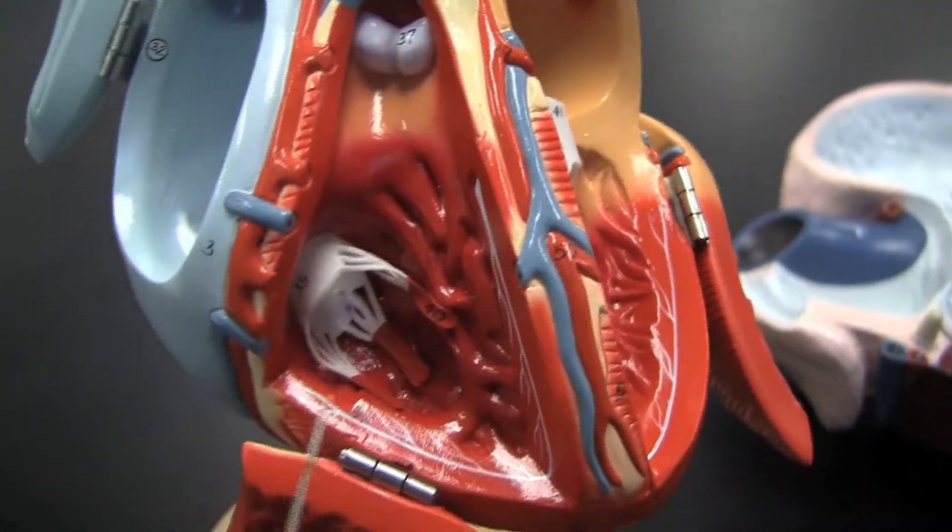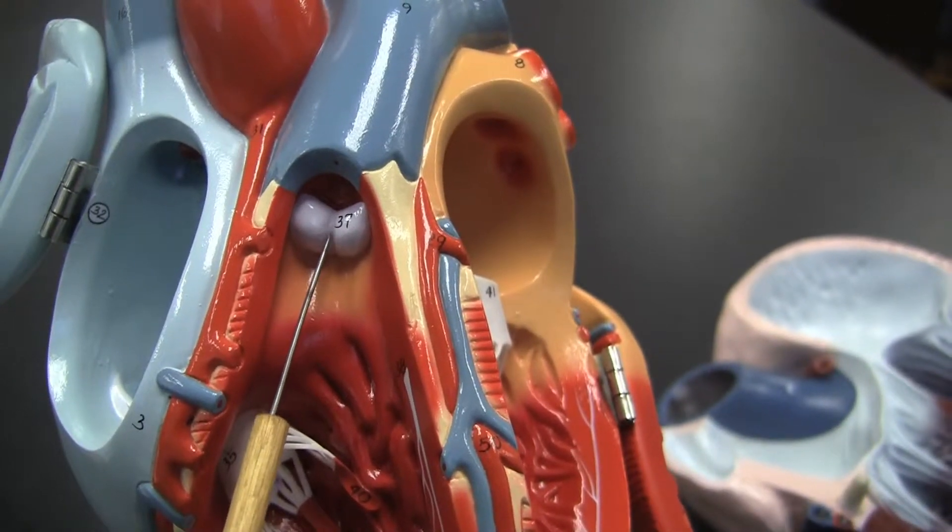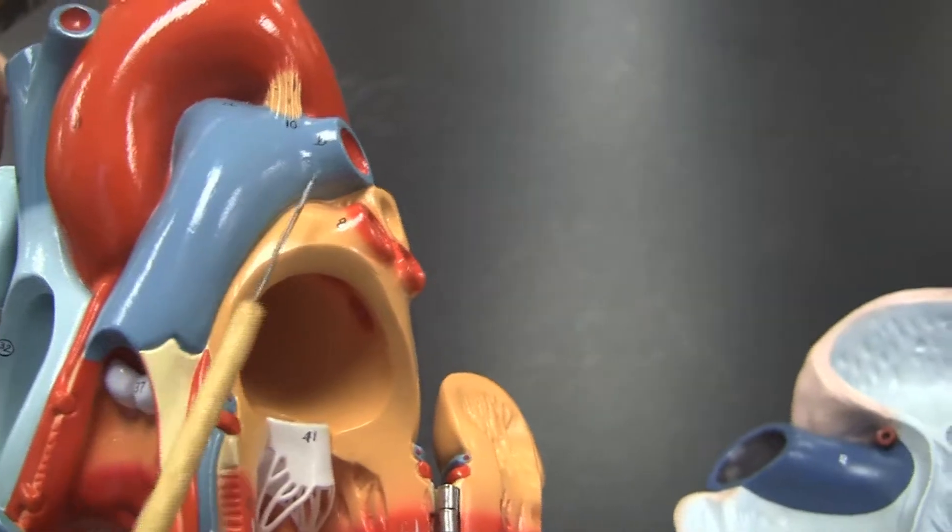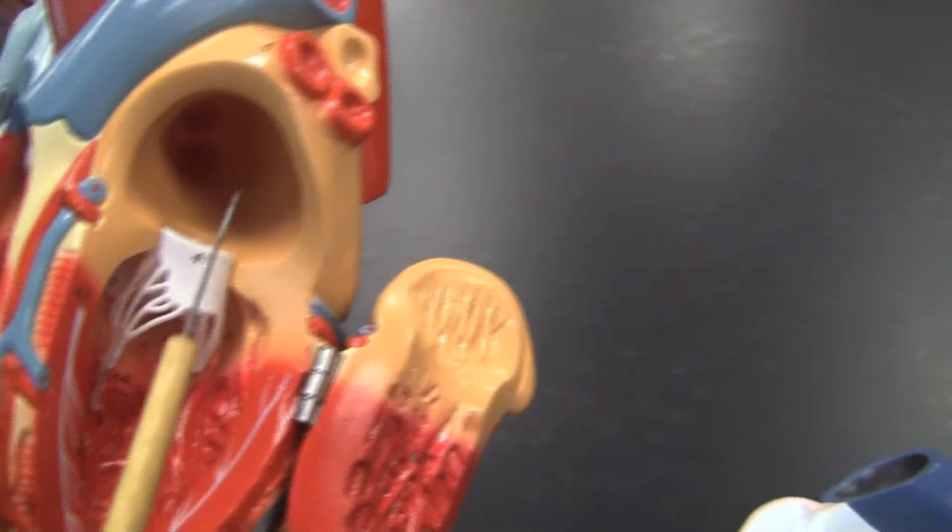And blood is going to go up through the pulmonary valve, pulmonary semilunar valve into the pulmonary trunk and branch off. It's going to come back through the pulmonary veins into the left atrium.